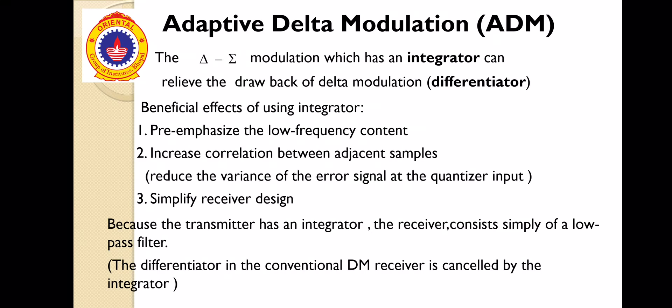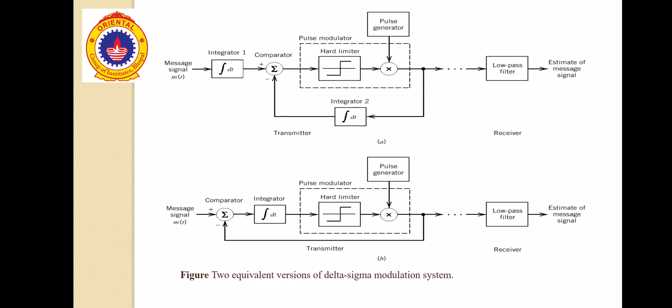Adaptive Delta Modulation is a scheme to solve the problems that occur in Delta Modulation, that is Slope Overload Distortion and Granular Noise. In Adaptive Delta Modulation, also known as Delta Sigma Modulation, which has an integrator and relieves the drawback of Delta Modulation. Benefits: effects of using integrators are pre-emphasize the low frequency quantum component, increase the correlation between the samples, and simplify the receiver design. Because the transmitter has an integrator, the receiver consists simply of a low-pass filter. The differentiator in the conventional DM receiver is cancelled by the integrator. In Delta Sigma Modulation or Adaptive Delta Modulation, we have variable step size according to m(t).